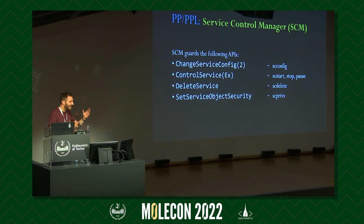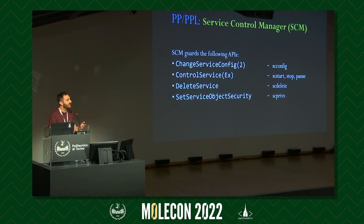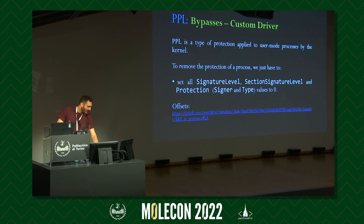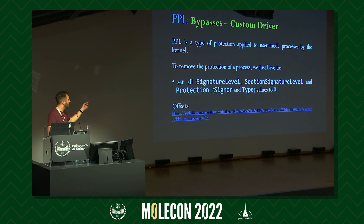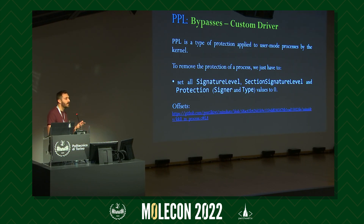PPL is a user-mode protection applied by the kernel, so with kernel-level code access you can patch out the protection flags. To do so, you simply zero out the EPROCESS structure fields: signature level, section signature level, and protection. If you can do that, the process transparently loses its protected status — it does not cause a blue screen of death, nor does it trip kernel patch protection.